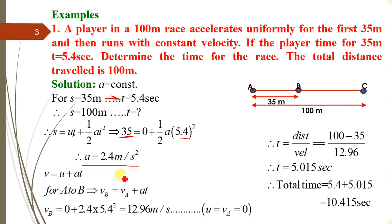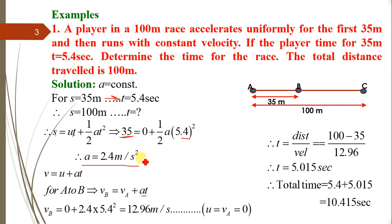Using v = u + at for the segment A to B, the final velocity at B equals initial velocity at A plus acceleration times time. So v_B = 0 + 2.4 × 5.4 = 12.96 m/s. From B to C, the velocity remains constant at 12.96 m/s.